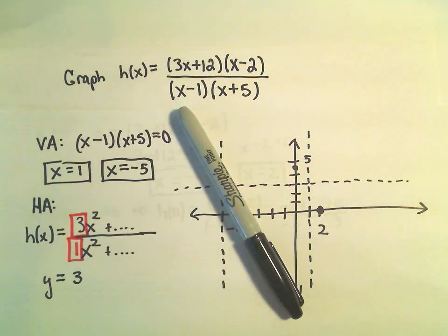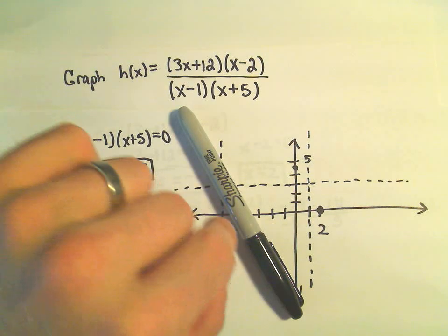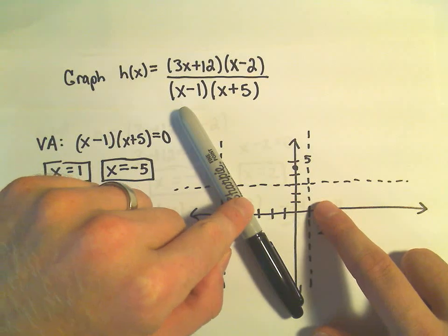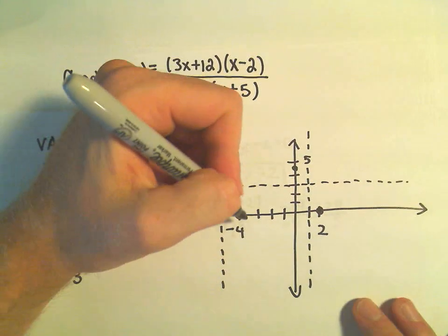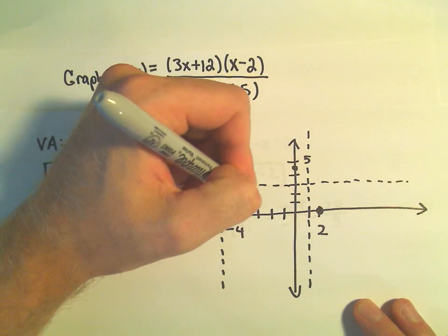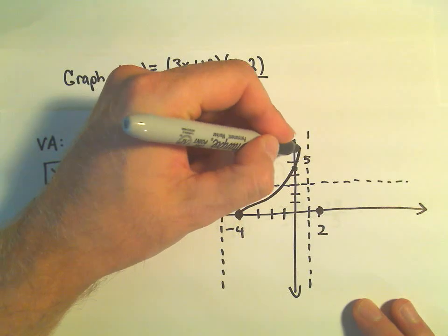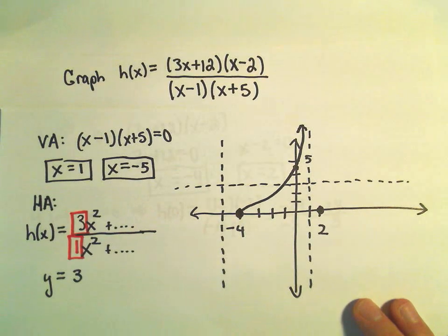And then you would have to have another x-intercept. But the only place it's allowed to cross is at 2 and at negative 4. So that tells me the graph is doing something and it's going through and it has to be spiking up to positive infinity.